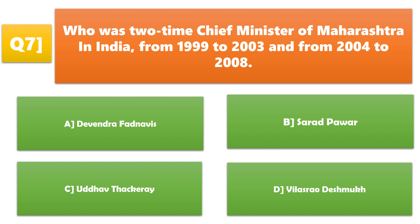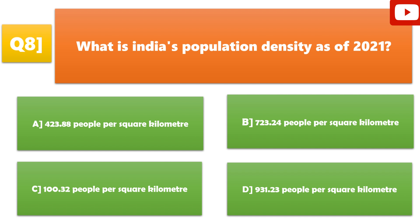Who was two-time chief minister of Maharashtra in India from 1999 to 2003 and from 2004 to 2008? A. Devendra Fadnavis, B. Sharad Pawar, C. Uddhav Thackeray, D. Vilasrao Deshmukh. D. Vilasrao Deshmukh is the correct answer.